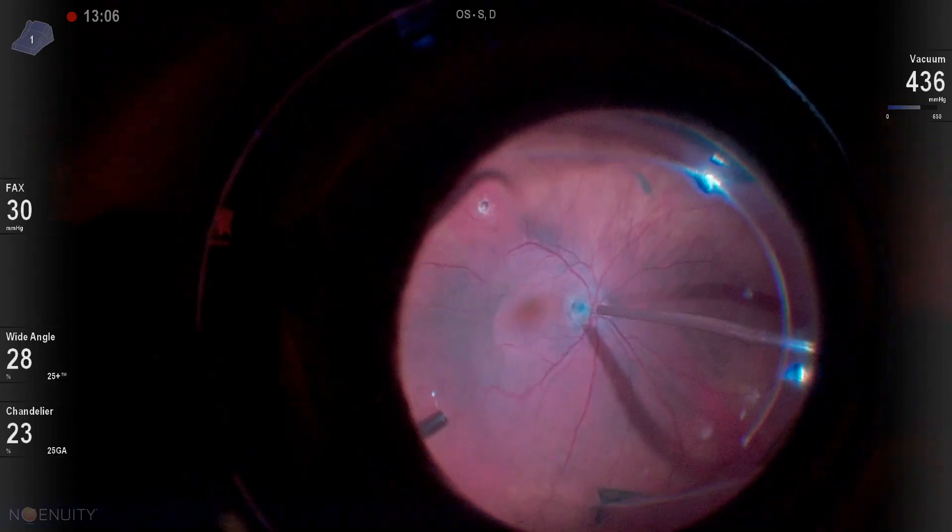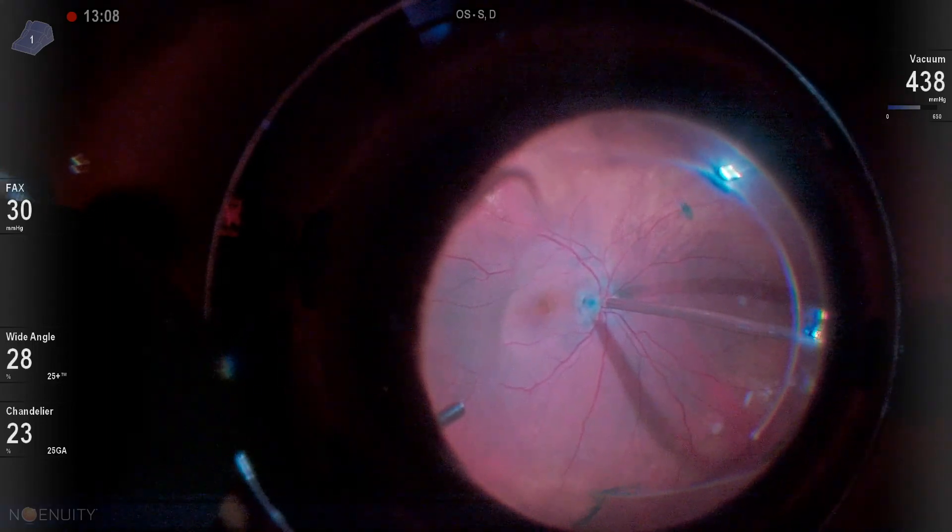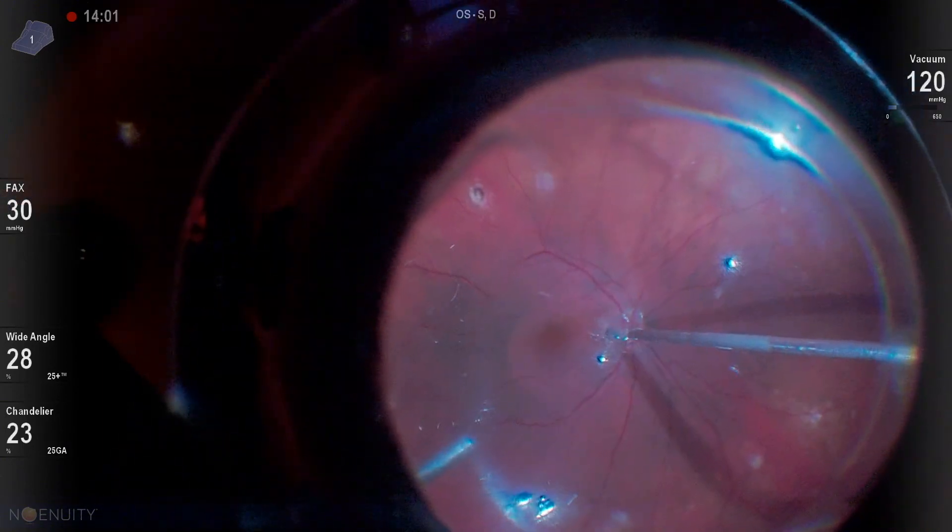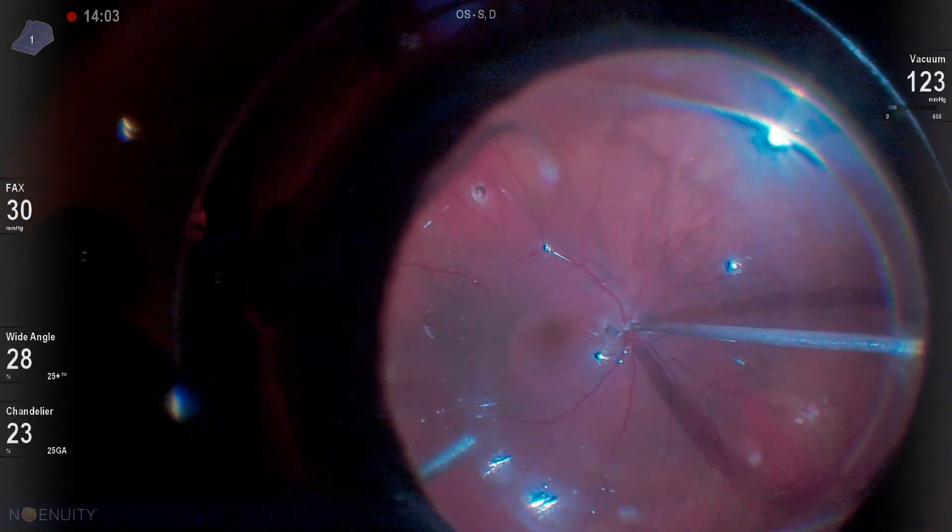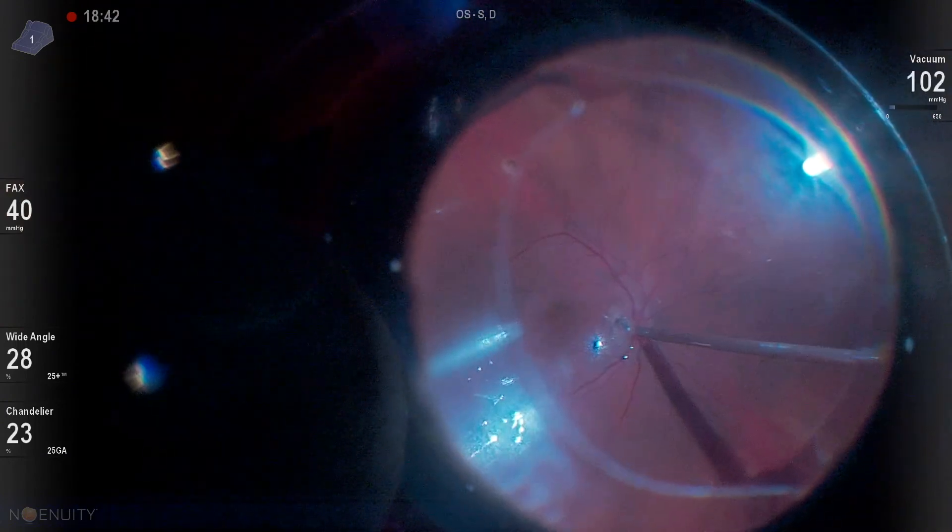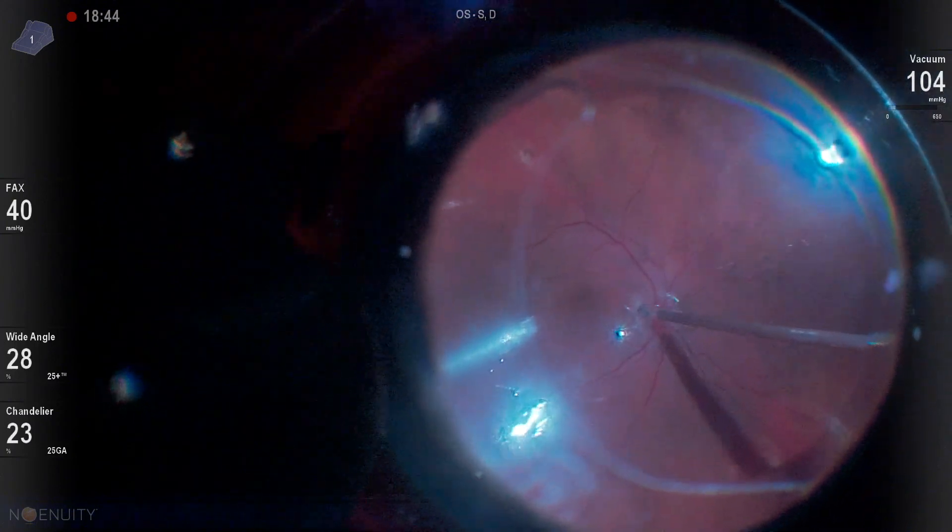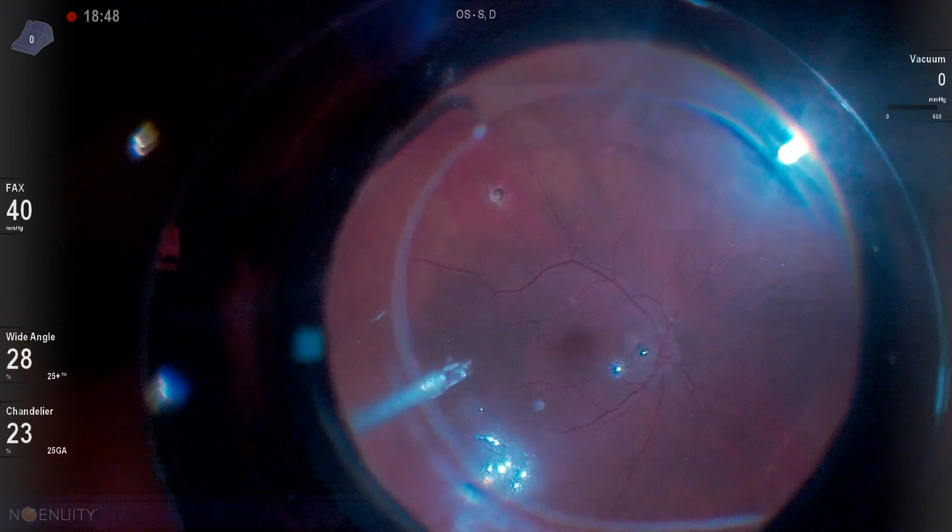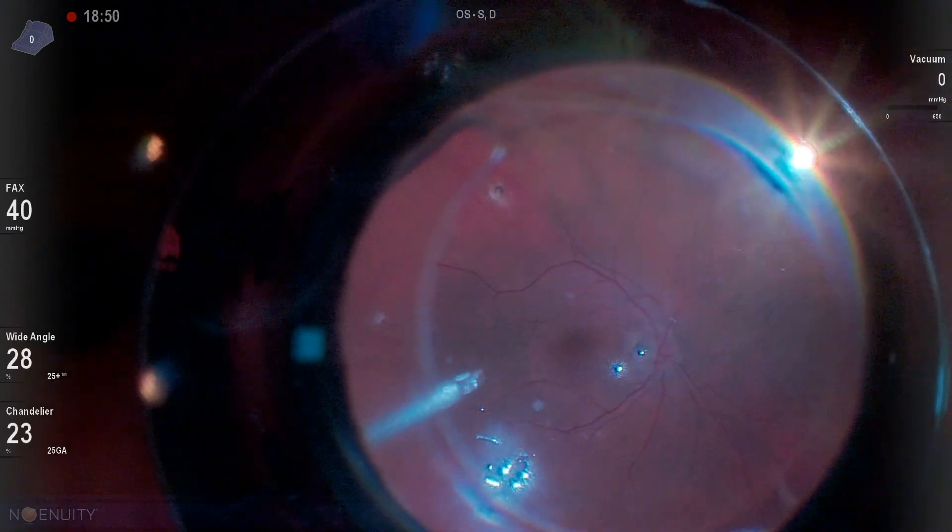The real key to using this tissue glue is the fact that there's an activator and there's the glue itself. And so you really want to have this as dry as possible. Now, this is where the chandelier light comes in really helpful because in reality, what you have to do is you have to have two instruments in the eye. So in my left hand right now, I actually have the activator. In my right hand, I have a soft tip.